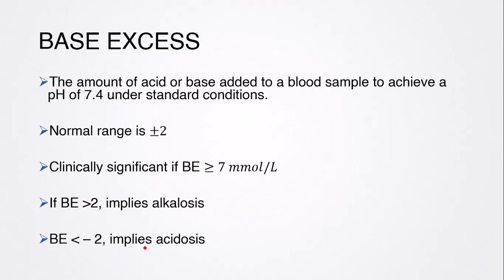Moving on to base excess: base excess is the amount of acid or base that needs to be added to a blood sample to achieve a pH of 7.4, the normal pH of blood. The normal range for base excess in a healthy individual is between plus and minus 2. A base excess greater than positive 2 implies alkalosis or alkalemia, while a base excess less than negative 2 implies acidosis or acidemia in blood.